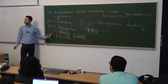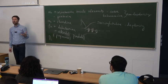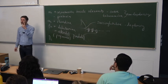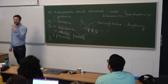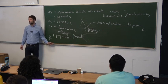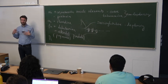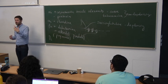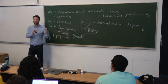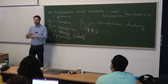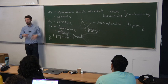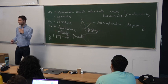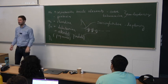Beta-2 agonists are mostly used clinically to treat asthma. Inhalers used by asthmatics to stop an attack contain beta-2 agonists, which cause dilation of the smooth muscles of the bronchial tree and stop the attack. There are typically two types of inhalers: maintenance inhalers used regularly, which usually contain corticosteroids, and rescue inhalers with beta-2 agonists for active attacks.